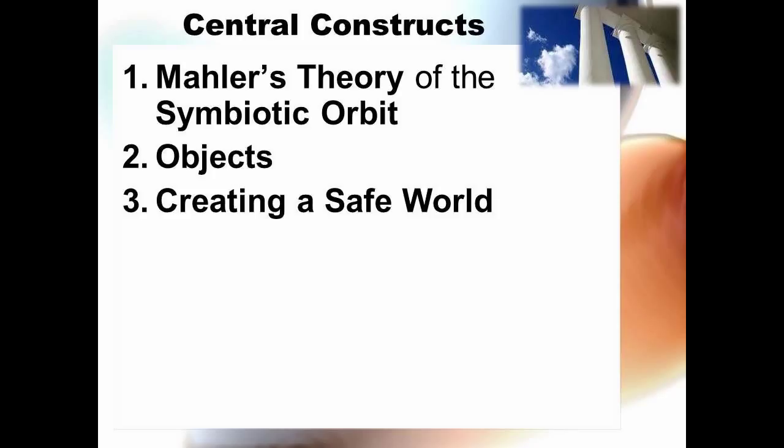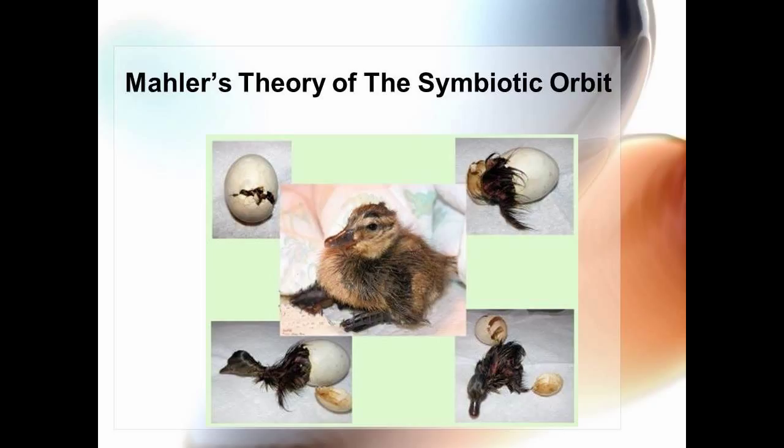In the early 1950s, Margaret Mahler developed a model of separation individuation, which described the intricate process of the early development of the child. Calling it the theory of the symbiotic orbit, she postulated that many behaviors and choices one makes in life result from this crucial early process. Mahler proposed three distinct stages.